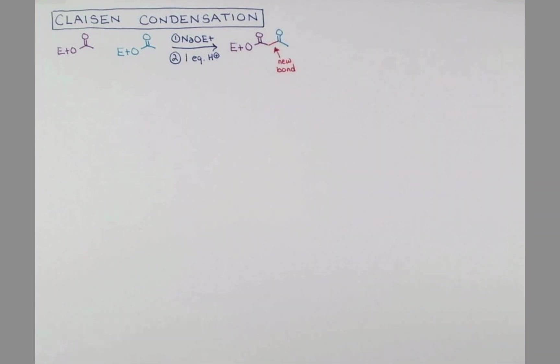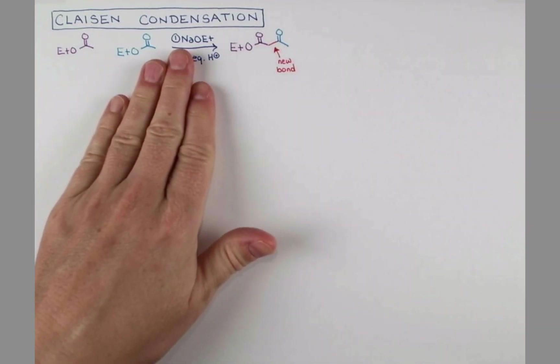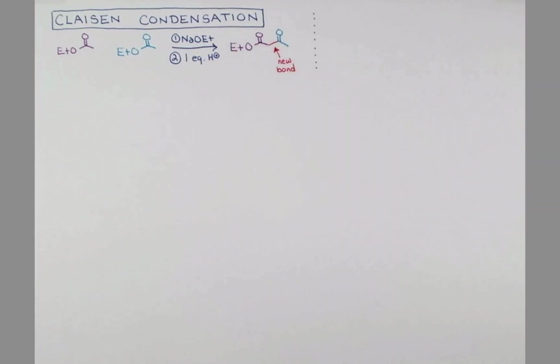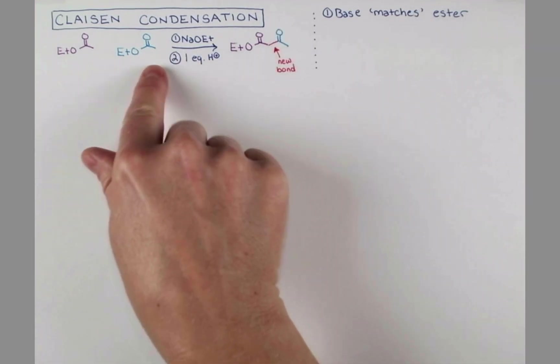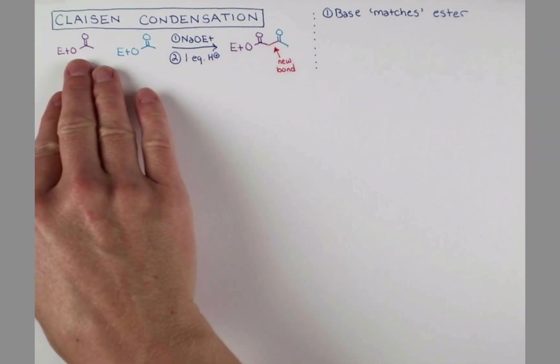Before we tackle the mechanism, I need to tell you a couple important considerations about the base in this reaction. First of all, the base should match the ester. So what do I mean by the base matching the ester? Well, over here we have ethyl esters. Notice we have the ETO.